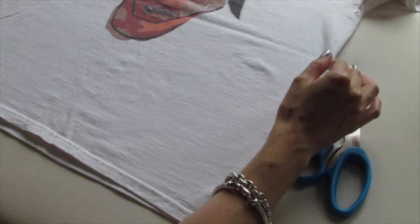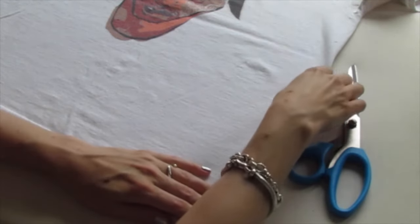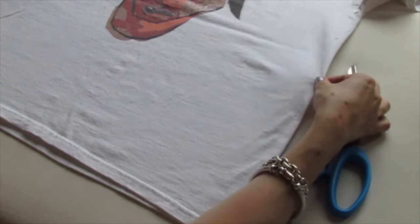First thing you're gonna do is try on your shirt and decide how far up the side you want your slits to go. I'm gonna cut mine about halfway up the shirt.